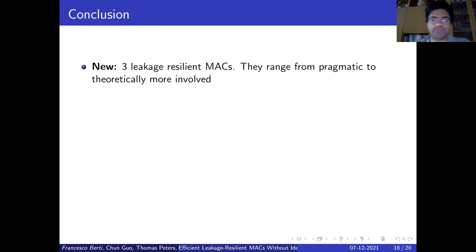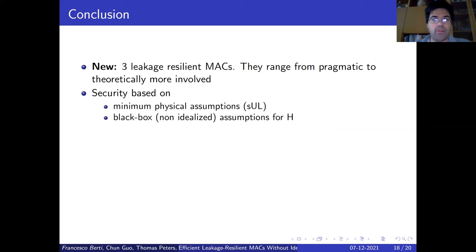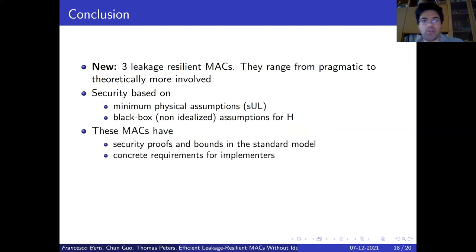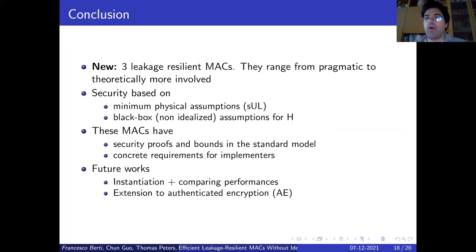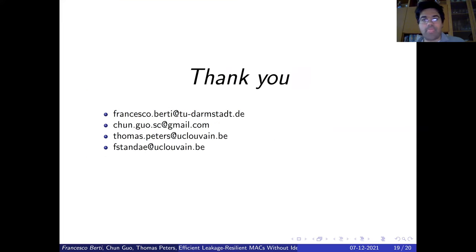To conclude, we have provided three new leakage-resilient message authentication codes, ranging from pragmatic to theoretically more informed. Their security is based on minimal physical assumptions — strong unpredictability with leakage — and non-idealized assumptions for their hash functions. These MACs have security proofs and bounds in the standard model, providing concrete requirements for implementers. As future work, we leave the problems of instantiating them, comparing their performances, and extending to authenticated encryption. Thank you for your attention, and my co-authors and I are more than happy to answer your questions.